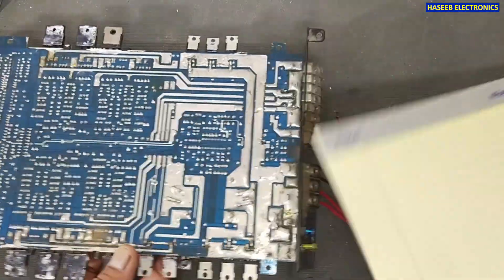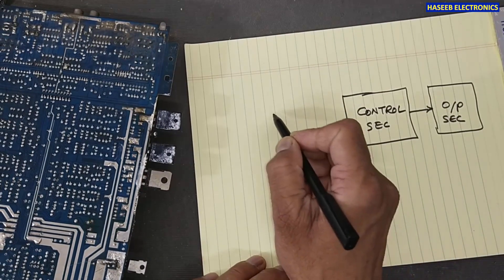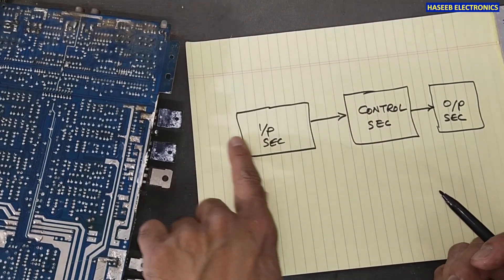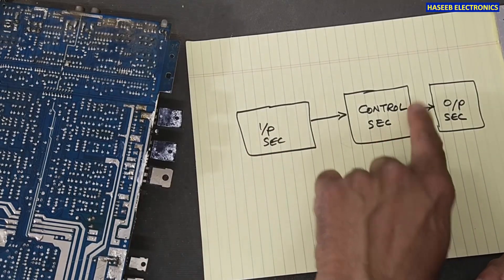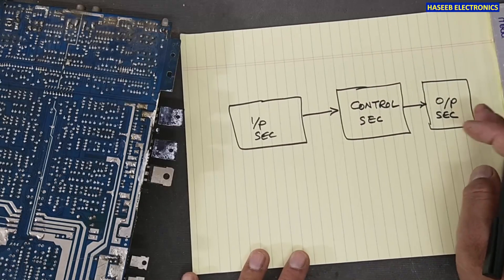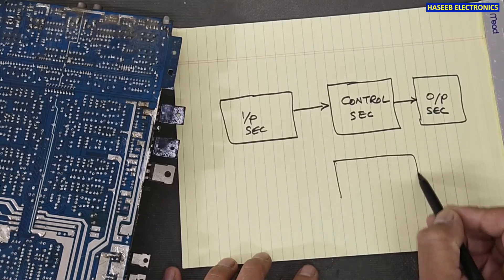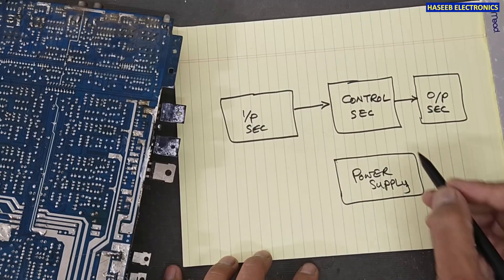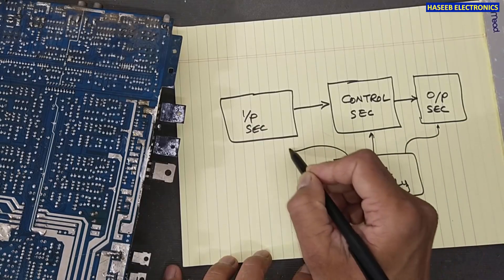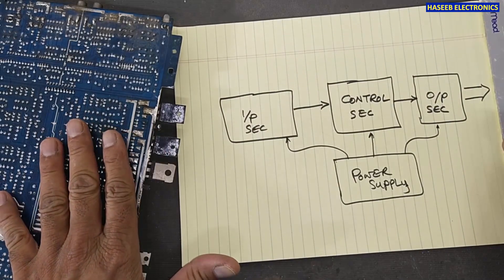Let's look at the circuit. When we see any circuit, it has three systems: output section, control section, and input section. The input section provides the signal to be processed; the control section processes it and feeds the output section, which delivers our required result. To power up this circuit we need a power supply, which will apply power here, here, and here — and then it will drive the load.